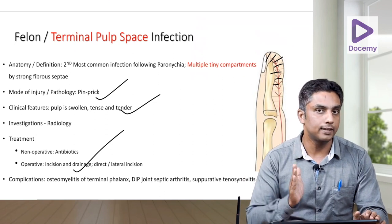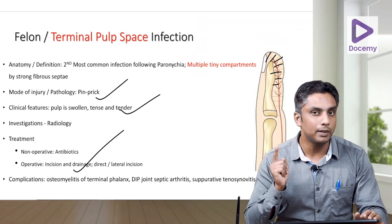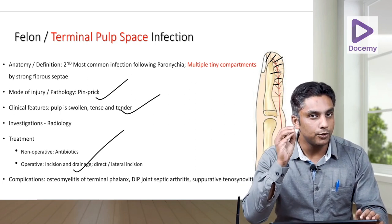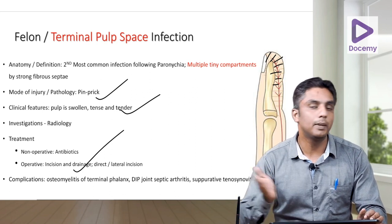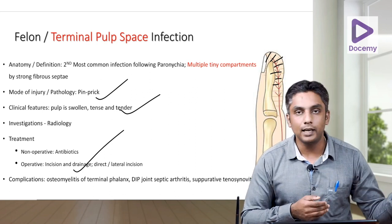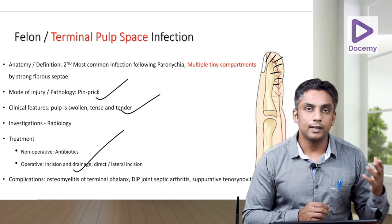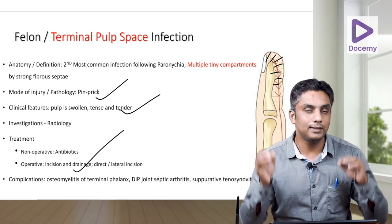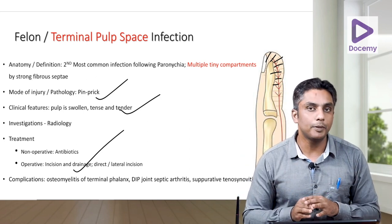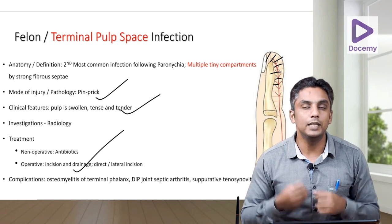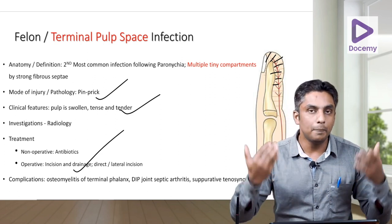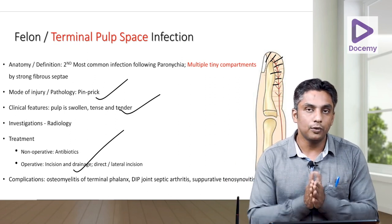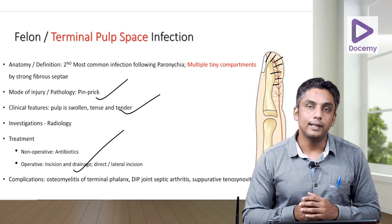So this finishes our important session on hand disorders. I've covered around 14 to 15 topics. This needs multiple readings — these topics need to get stuck in your brain. Hearing 'gamekeeper,' the ulnar collateral ligament should come to mind; mallet finger means distal extensor tendon avulsion; Jersey finger means FDP avulsion. Do repeated reading, repeated listening, and discuss with friends. Thanks for listening — hope to catch you with another topic in the next session.